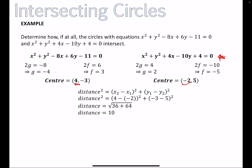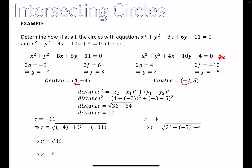Now we find the radius of each circle using the radius formula: r = √(g² + f² − c). For the first circle, c = −11, so r₁ = √(16 + 9 + 11) = √36 = 6. For the second, c = 4, so r₂ = √(4 + 25 − 4) = √25 = 5.